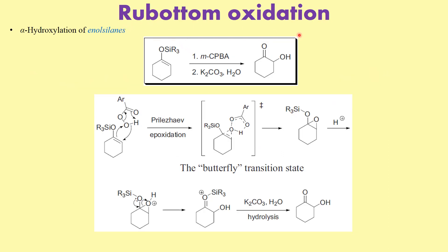So what basically is Rubottom oxidation? This is nothing but the alpha-hydroxylation of enol silane. What we have here is an enol silane, and when we treat this enol silane with meta-chloroperoxybenzoic acid (mCPBA), which is an epoxy reagent used for the epoxidation of alkenes, followed by treating with potassium carbonate, what we end up getting is the placement of a hydroxyl group alpha to the ketone. That is why it is called alpha-hydroxylation, because this hydroxylation is taking place at the alpha position.